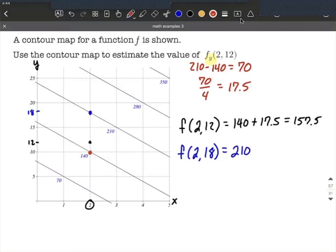If I went down below to the red dot, that one's a little bit easier to see. That's going to be f of 2 comma 10 equals 140, the value of the mapping there, the z value coming out.